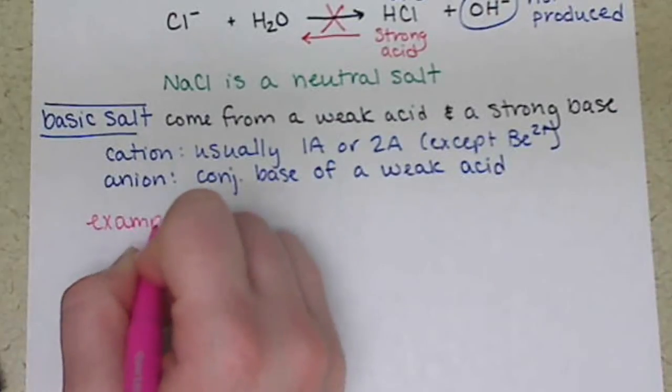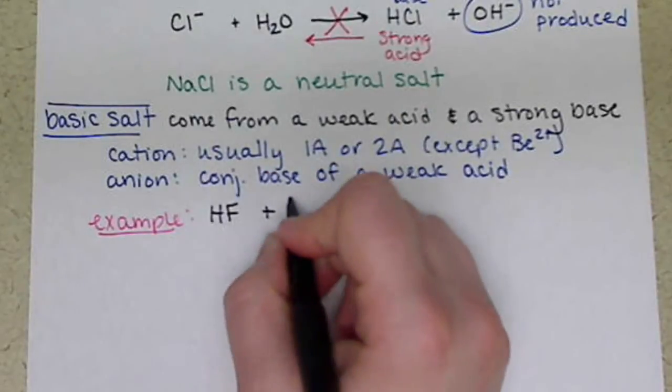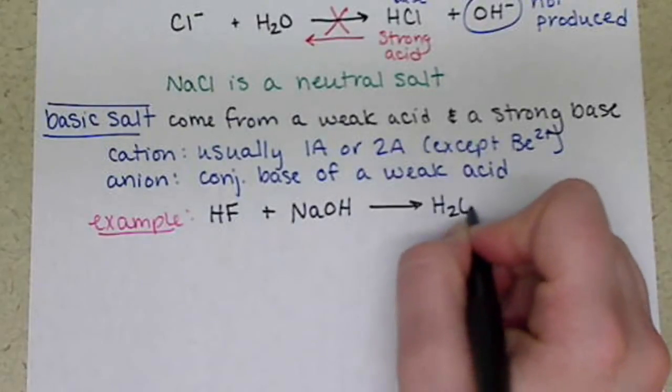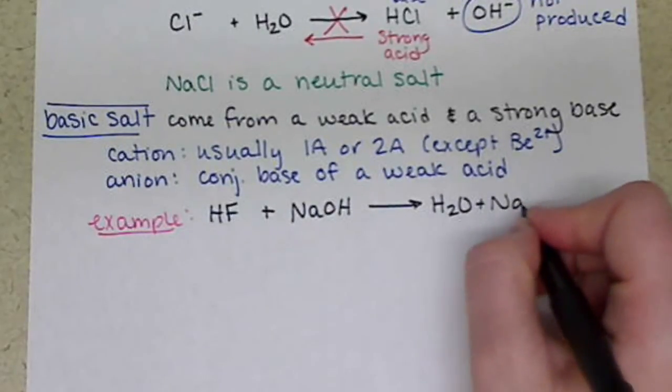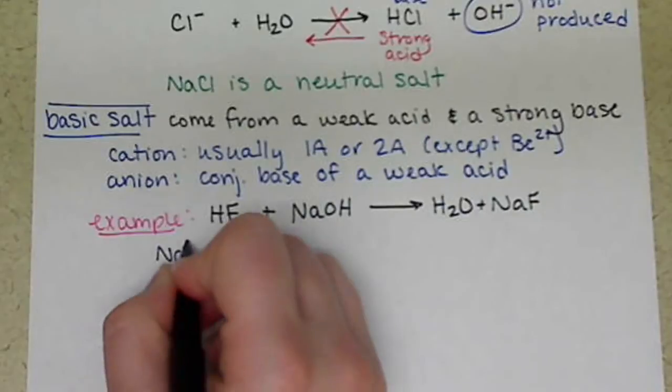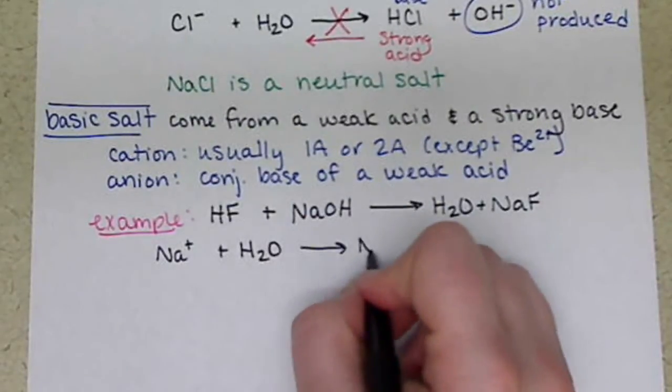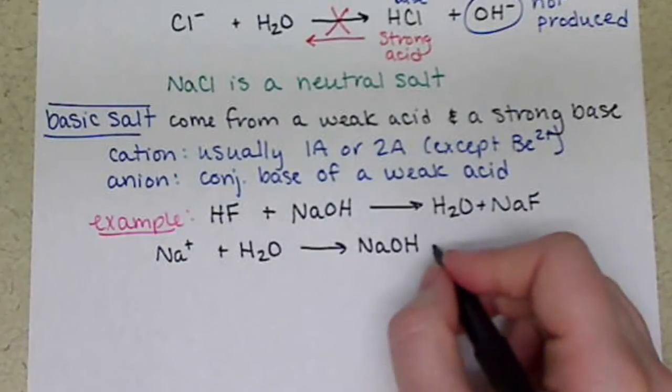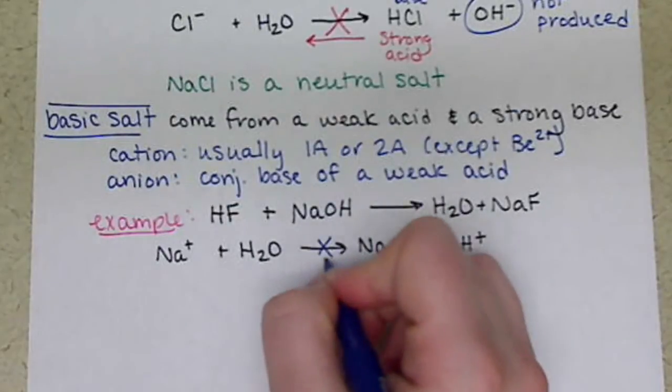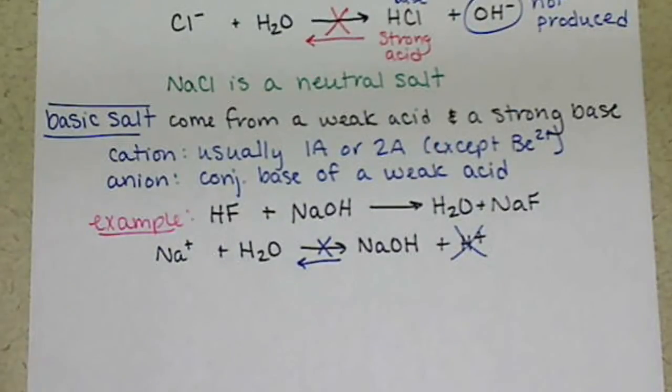So we can look at an example. For example, let's take HF with NaOH to form H2O and NaF. So sodium fluoride is our salt. We're looking at Na+ plus H2O. Again, form NaOH and H+, but this doesn't happen. Reverse. So we're not producing H+.